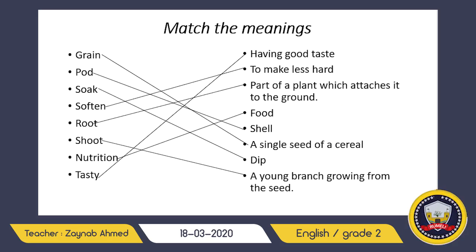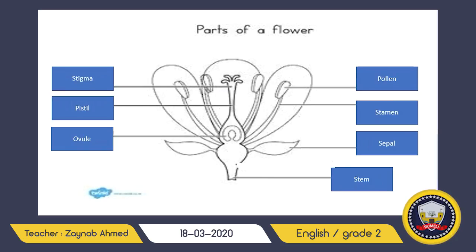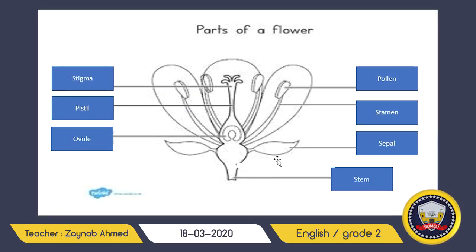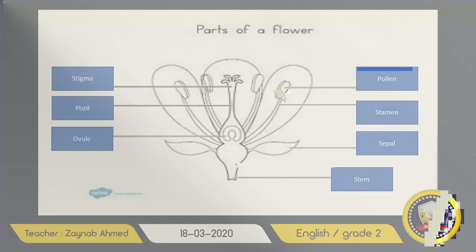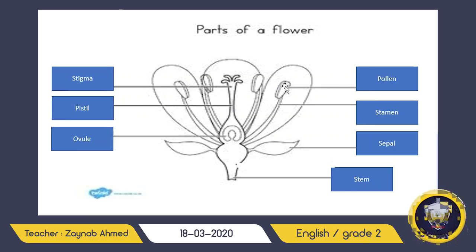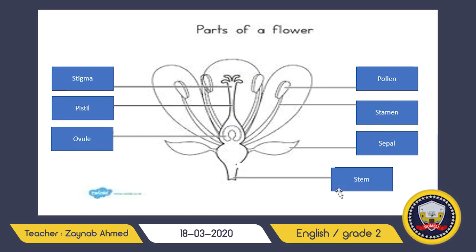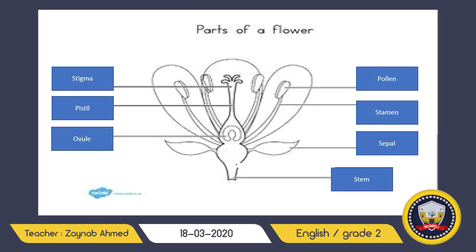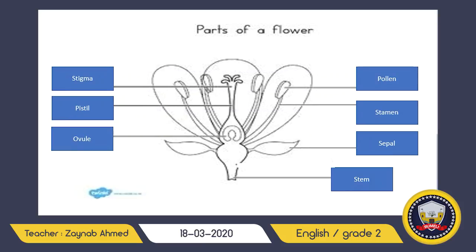Finally, I want you to look at the parts of a flower. I have labeled these parts — they are not easy to remember, but try. Pollen: the yellow grains on top of the stamen. Stamen. Sepal. Stem. Stigma: the sticky part at the top. Pistil. Ovules. These are the different parts of a flower.